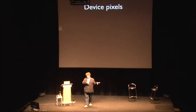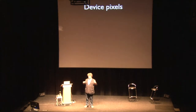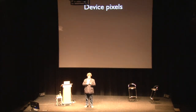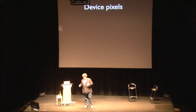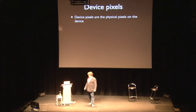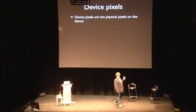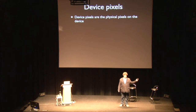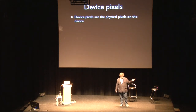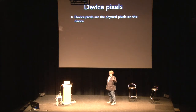CSS pixels' main purpose is to make sure that zooming and viewports work well, and you as a web developer don't have to think about it. The other kind of pixels is device pixels — and that's really simple. They are the physical hardware pixels on your device. Every single computing device with a screen has a certain number of hardware pixels that are just electronics. You can't change that number in any way.